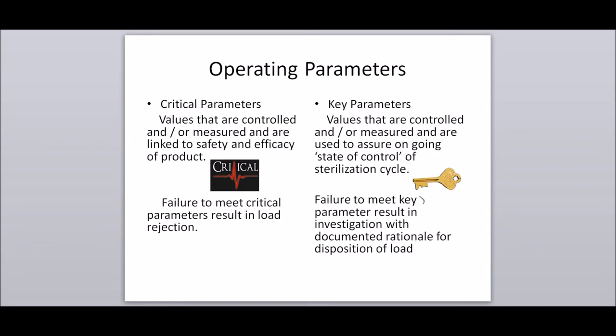There are two types of operating parameters: critical parameters and key parameters. Critical parameters: values that are controlled and/or measured and are linked to the safety and efficacy of a product. Failure to meet critical parameters results in load rejection. Key parameters: values controlled and/or measured to assure ongoing state of control of the sterilization cycle. Failure to meet key parameters results in an investigation with documented rationale for disposition of the load.